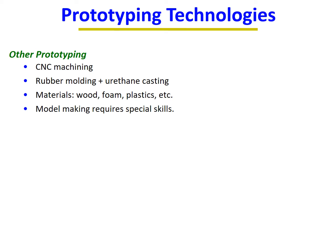Other prototyping methods beyond free-form fabrication include CNC machining, rubber molding, and urethane casting. Materials used can include wood, foam, and plastics. Model making requires special skills and analysis. Free-form fabrication and 3D CAD analysis remain the two most modern and widely used prototyping technologies.